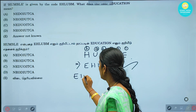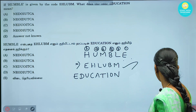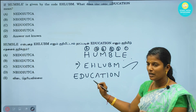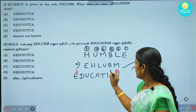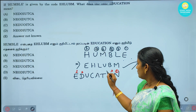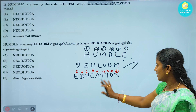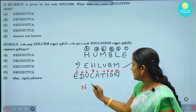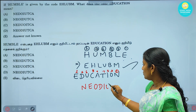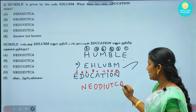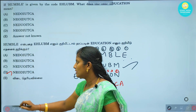Now let's see how we use EDUCATION. Education — we use the same pattern. First is the back side. We use the same pattern: 1, 2, 3, 4, 5, 6, 7, 8, then last 9. So now let's see how we form it: N, E, O, D, I, U, next T, C. So now let's see what matches. Option D — last D is our answer.